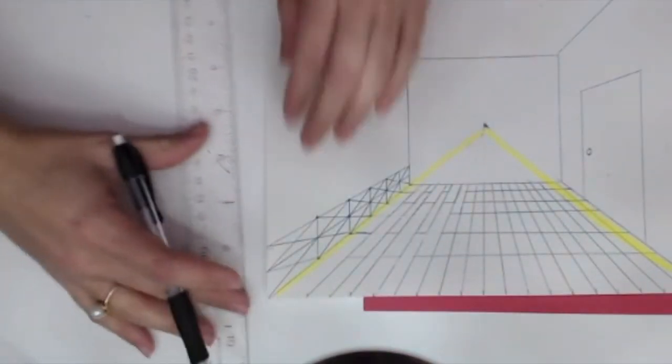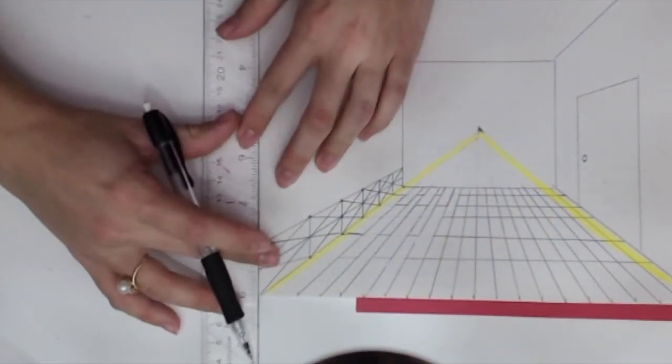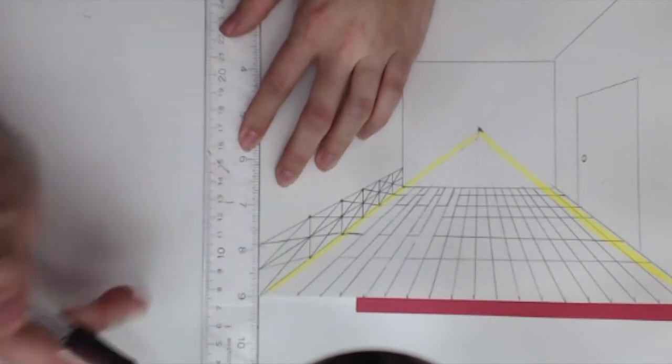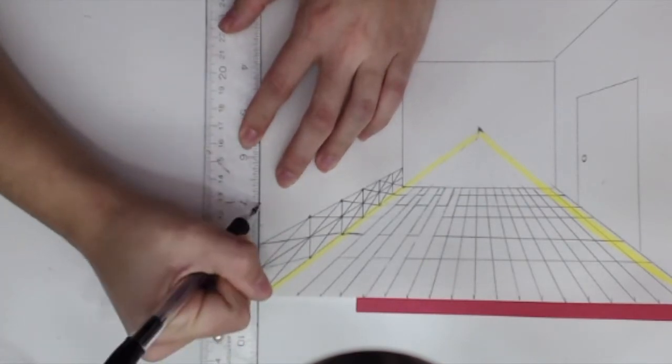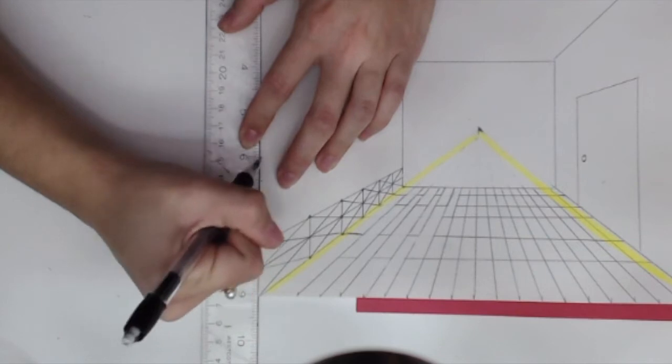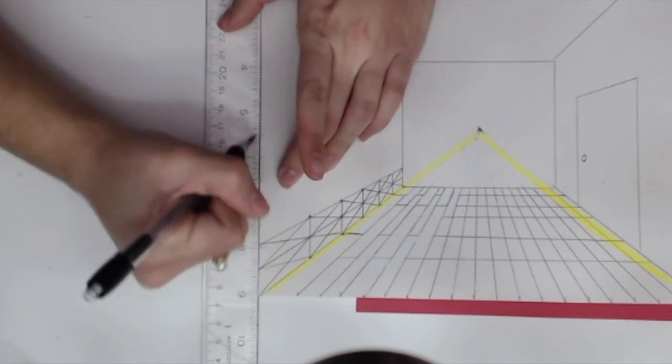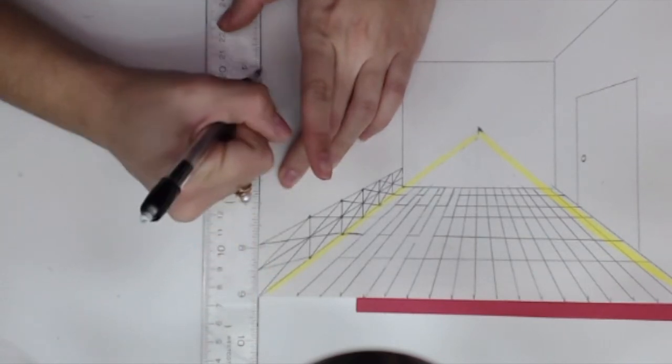Now along your left side of your picture plane here, we already have these two little half-inch orthogonals coming out. So go ahead and continue on that trend. Put little tick marks every half inch along your wall to get these bricks started.